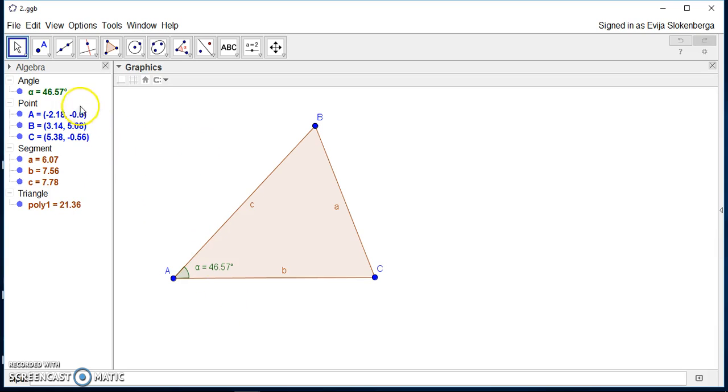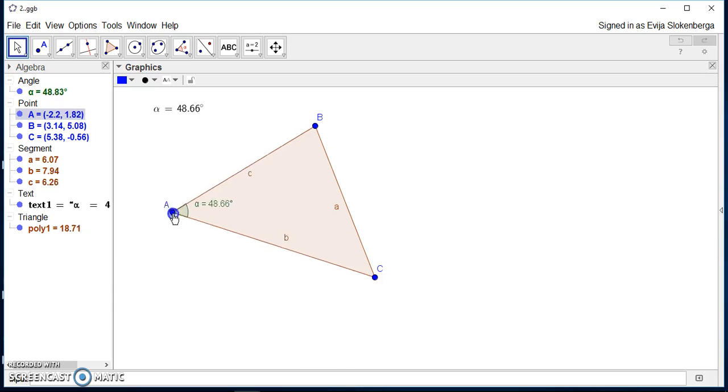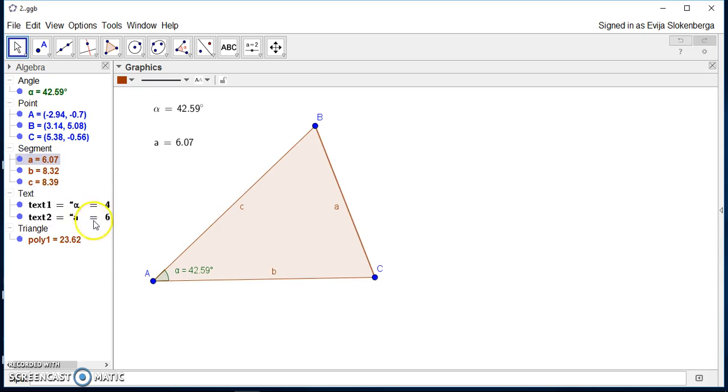Now I'll show you some ways to create dynamic text. The easiest one is to just take the object from the algebra view and drag it into the graphics view. Here we see angle alpha and here if we drag the vertices, we see that the text changes dynamically as we move the vertices. We can do the same with any segment or, for example, the area of the triangle.